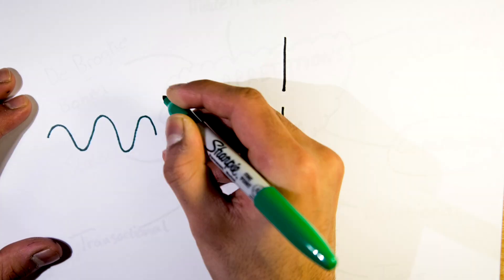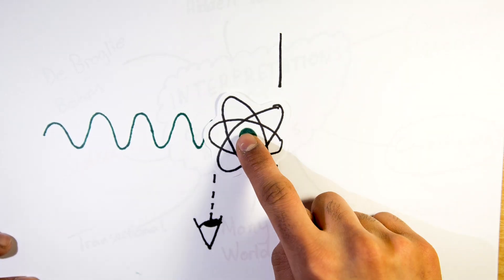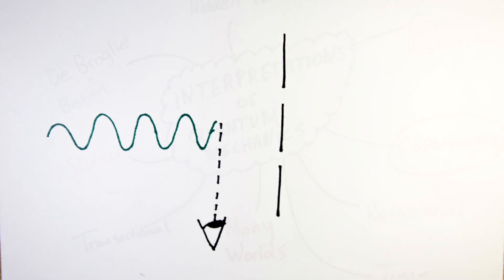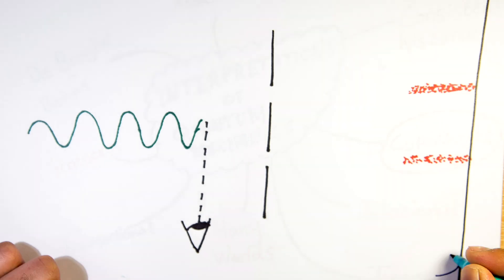The Copenhagen interpretation, in its essence, tells us that a particle can exist in a superposition of states. The act of observation causes the particle's wave function to collapse and the particle assumes a specific state when a measurement is made.